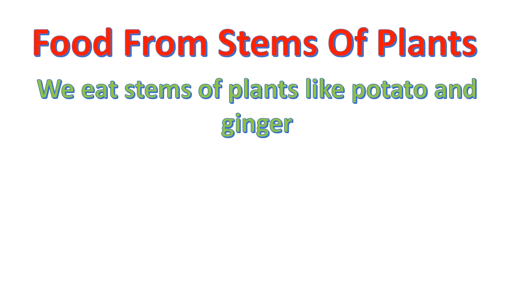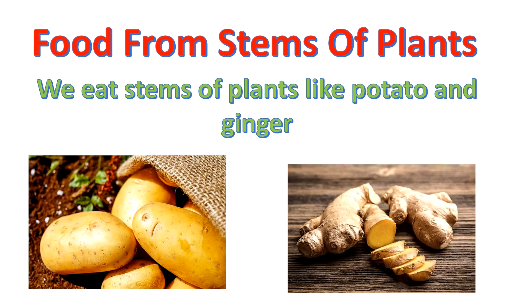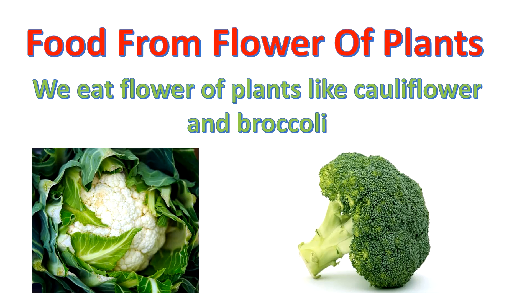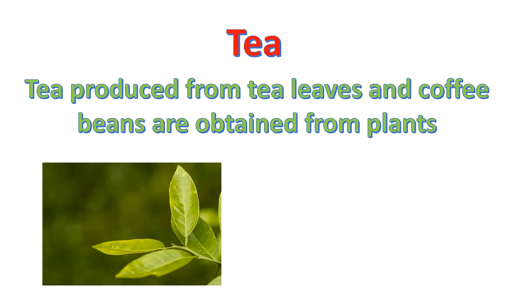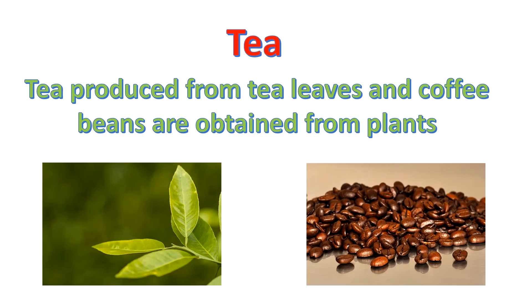Food from stems of the plants: we eat stems of the plants like potato and ginger, and we eat them as our food. Food from flowers of plants: we eat flowers of plants like cauliflower and broccoli. We also get tea from tea leaves and coffee from the seeds or beans of the coffee plant.